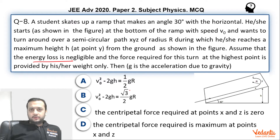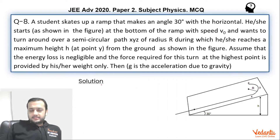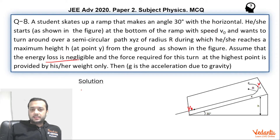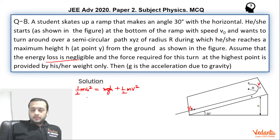Since energy loss is negligible, we can conserve energy. If the initial speed is V₀ and the speed at the top is V, then the initial kinetic energy — half MV₀² — equals the potential energy at the top, MGH, plus half MV². So from here we get V₀² − 2gH = V².